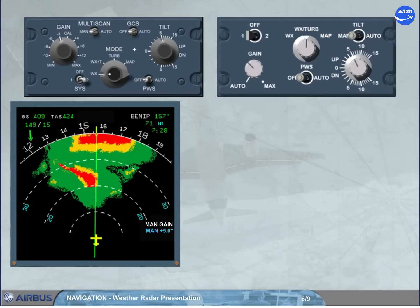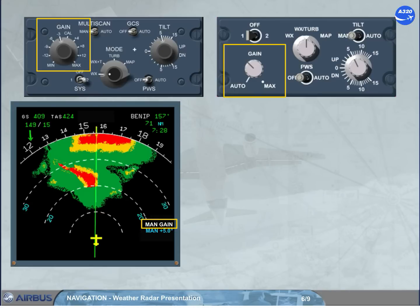The gain knob is used to manually adjust the sensitivity of the receiver. In this case, the white MAN GAIN indication appears as shown. On the version shown on the left-hand side, the manual sensitivity adjustment is available only in WX mode or in map mode.